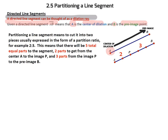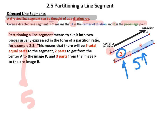The second thing to know is the term partitioning. To partition means to cut it into pieces or parts. For instance, if they said partition it in a 2 to 3 ratio, that means there are going to be 5 parts when you're done — 2 parts and then 3 parts to complete it. And it would always go 2 first, then 3, because we're starting from A.